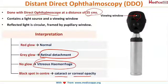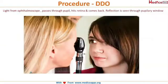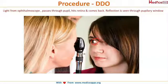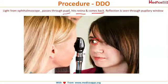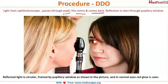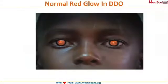A black spot in the center against the red glow may be indicative of a cataract or corneal opacity. In this procedure, light from the ophthalmoscope is reflected onto the patient's eye, passes through the pupil, hits the retina, and comes back — this produces the normal red glow. The reflected light is circular, framed by the pupillary window, and in the normal case it is red in color.